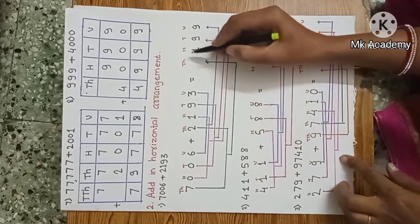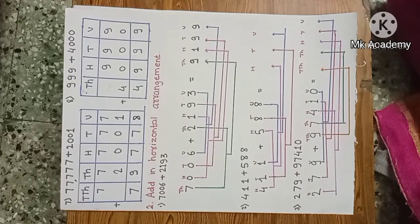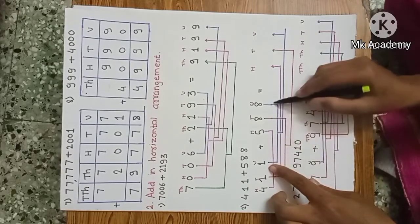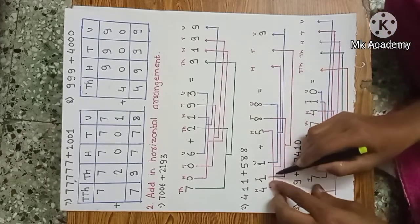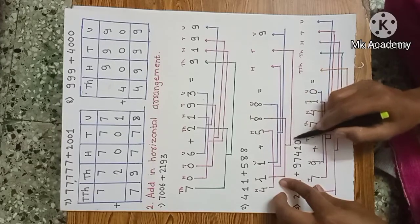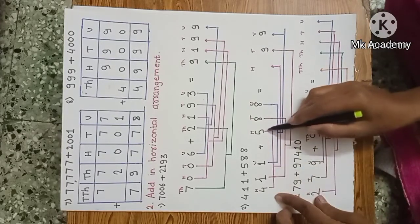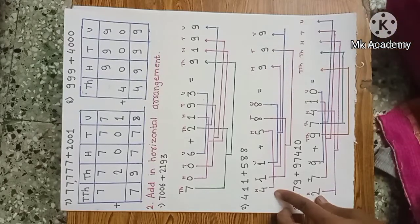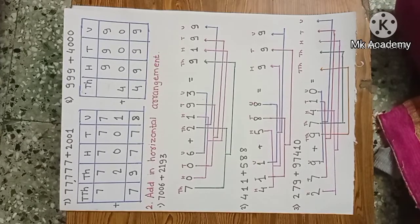Next example: 4,100 plus 1,100 plus 5,100 plus 1,100 in horizontal arrangement. Add first units: 1 unit plus 8 units is 9 units. Tens: 1 ten plus 8 tens is 9 tens. Hundreds: 400 plus 500 is 900. The answer is 999.